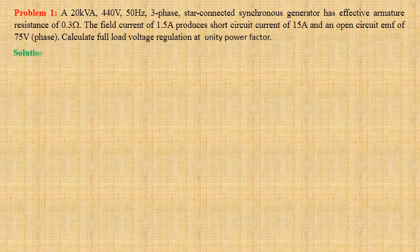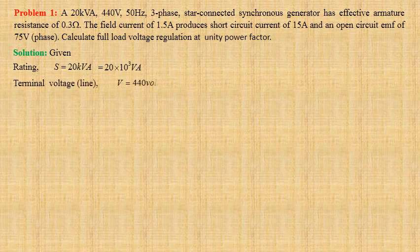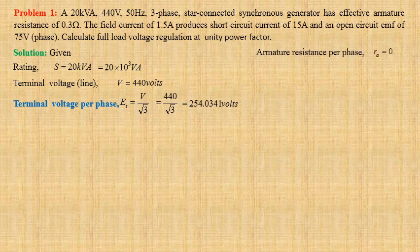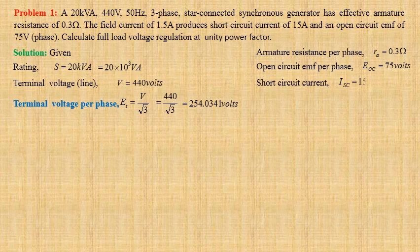Let us first write down the given data. Rating of the generator: S equals 20 kilovolt ampere, that is 20 × 10³ volt ampere. Line-to-line terminal voltage V equals 440 volts. Since the armature is star connected, terminal voltage per phase ET equals V by root 3, that is 440 divided by root 3, giving 254.034 volts. Given armature resistance per phase RA equals 0.3 ohm. Open circuit EMF per phase EOC equals 75 volts. Short circuit current ISC equals 15 ampere. Load power factor cos φ equals 1.